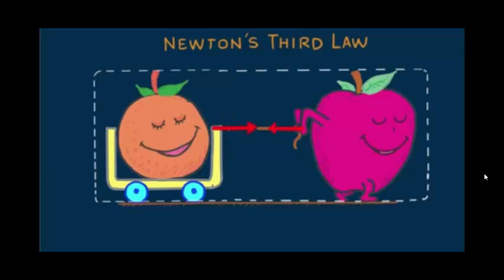Now let's consider a larger system enclosing both the orange and the apple. Notice now that the pair of vectors are internal to this system. In this case, they do cancel each other. So they play no role in moving or accelerating the system. That's why I'm erasing them.